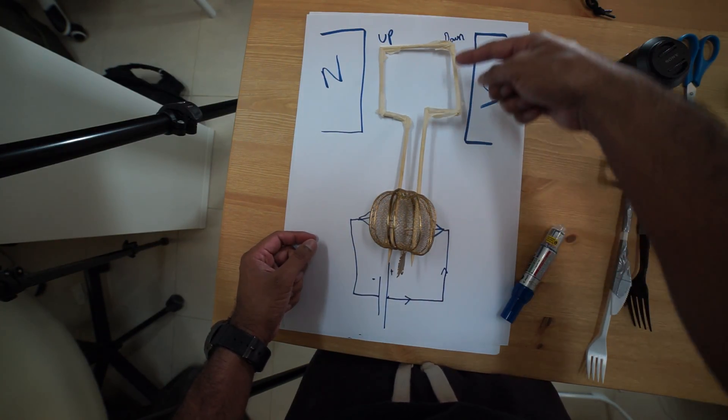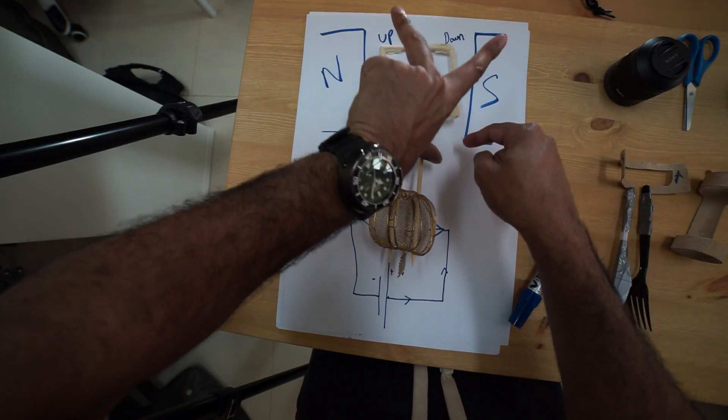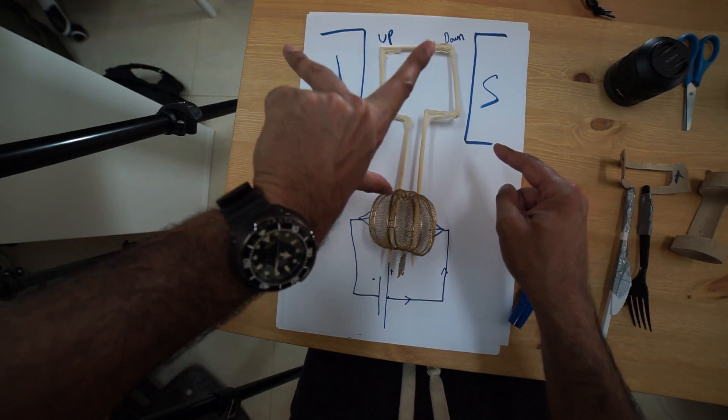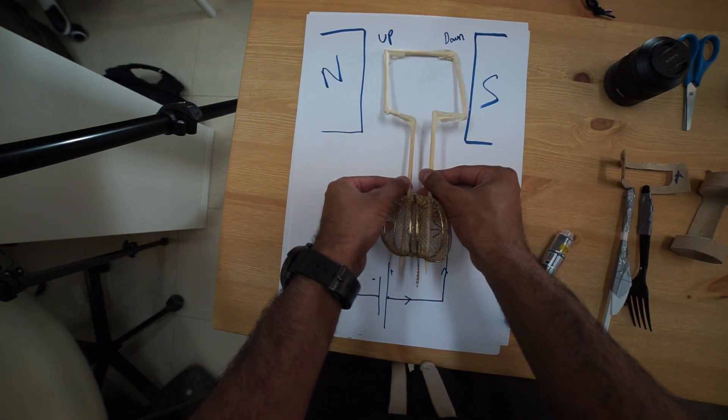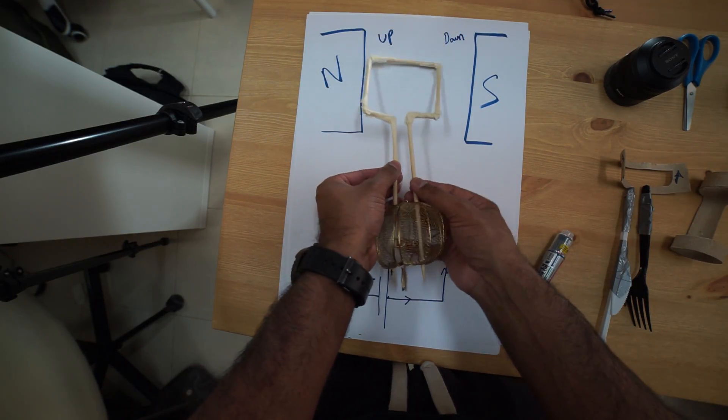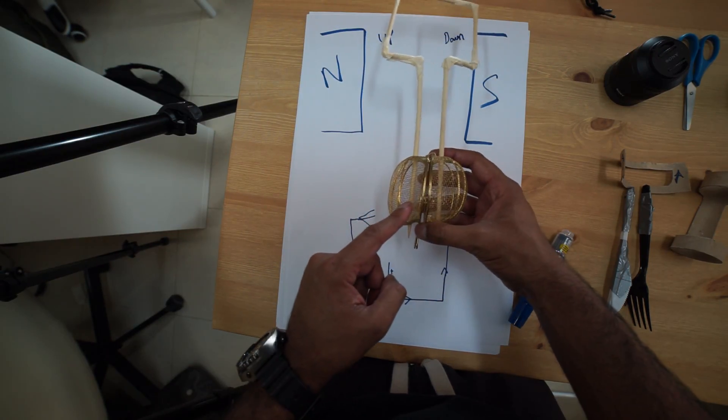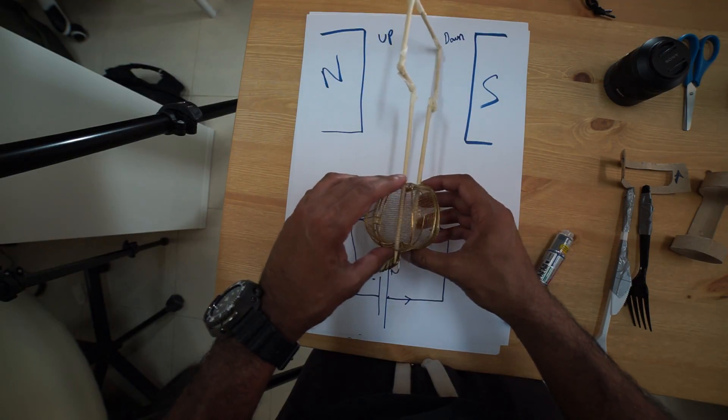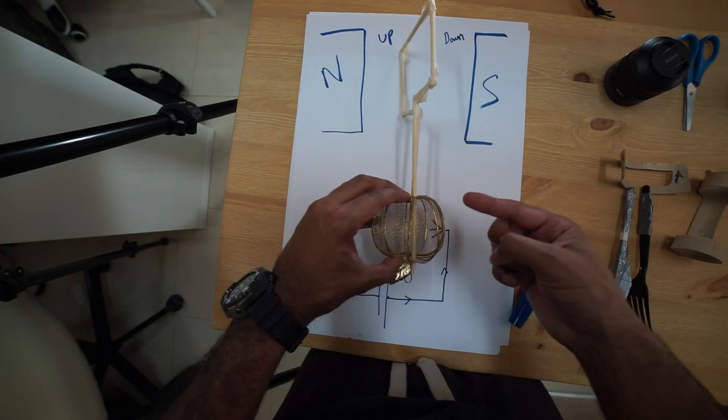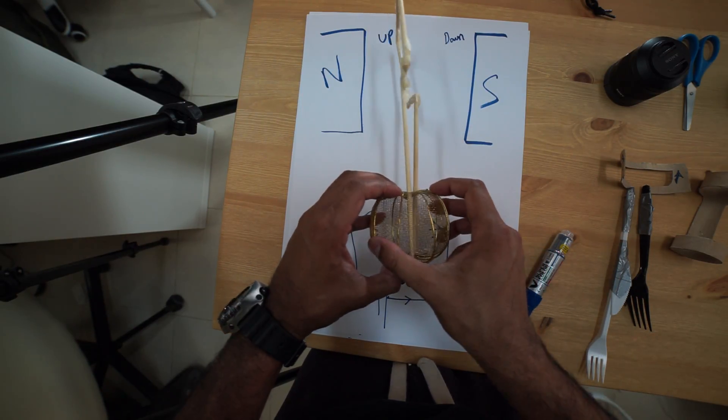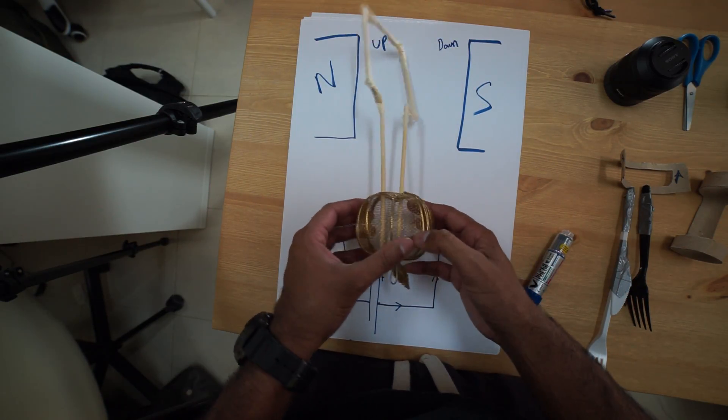And we've got the same situation again. The current is still flowing up, so first finger field, second finger current, movement is downwards. Can you see you've got this three-dimensional array—movement is down and this is going to go up. So it's always going to be spinning like this, and it's because this split ring commutator, when it goes into this position, you've got a gap and it cuts off the current, but the momentum helps it to keep turning. So it's just spinning like that.